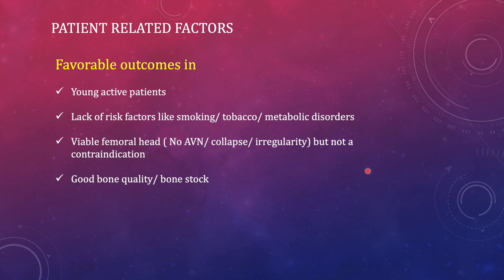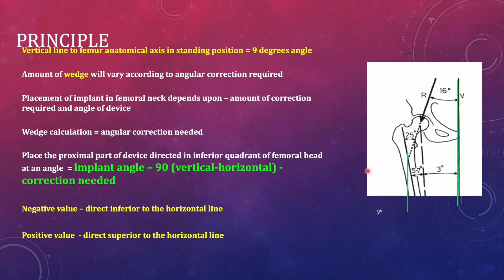Good bone quality is definitely a favorable indicator. Starting with the principle of valgus osteotomy: the femur anatomical axis is at 9 degrees to the actual vertical line — when standing, the femur anatomical axis tilts inward 9 degrees. The weight-bearing axis is directed 16 degrees towards the proximal femur compared to the vertical line, so the weight-bearing axis subtends 25 degrees when compared to the shaft femur axis (16 + 9 = 25 degrees). The mechanical axis is 3 degrees inward compared to the vertical line.